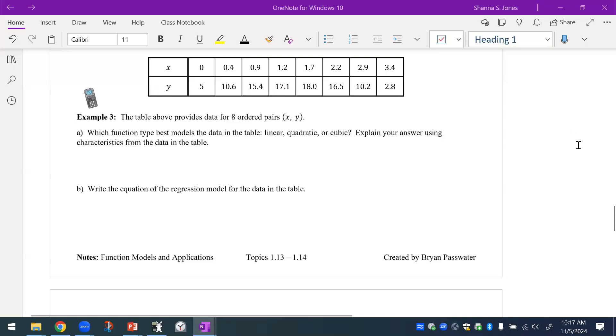So continuing with 1C.13 through 14, for example number three, we're reviewing how to create residuals and scatter plots using technology. The above data provides eight order pairs, and it says which function type best models the data in the table above. Explain your answer using the characteristics from the data in the table.